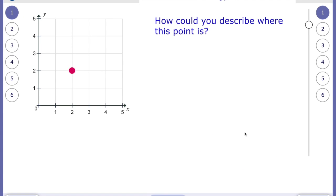Coordinates are used to describe where something is, so if we look at this grid here, this is called a coordinate grid, and you can see we have the x-axis going along the bottom, and it starts at zero and increases by one each time, and then we have the y-axis going up the vertical axis, which also starts at zero and goes up in ones. And then we have a pink blob. So how could we describe where this point is?